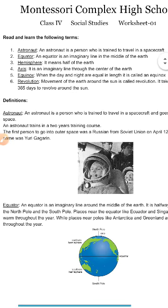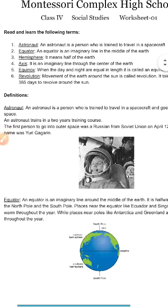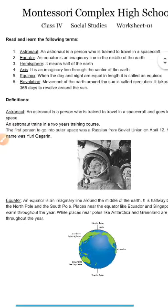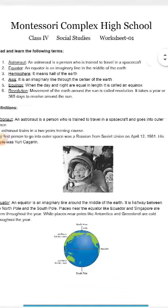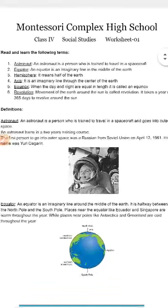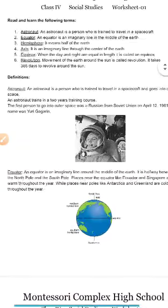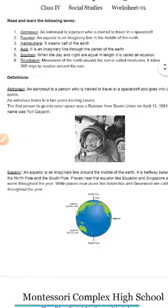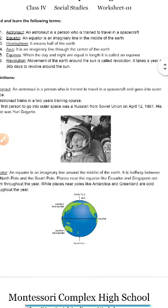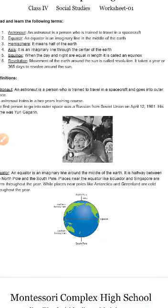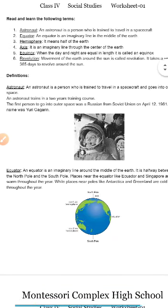Now let's move on to the definitions. We will study the same terms but in some detail. The definition of astronaut is: an astronaut is a person who is trained to travel in a spacecraft and goes into the outer space.